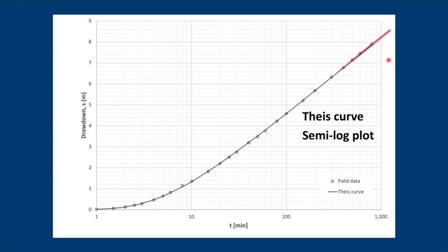In fact, we can draw a straight line right through it, and you can see that all late data points appear to plot on a straight line. Now this is the fundamental principle of the Cooper-Jacob method, which is basically a simplification of the Theis method.